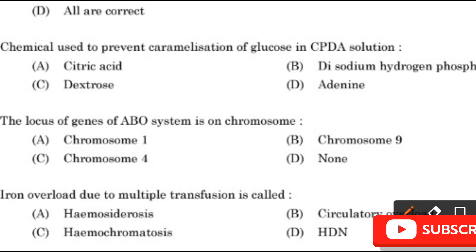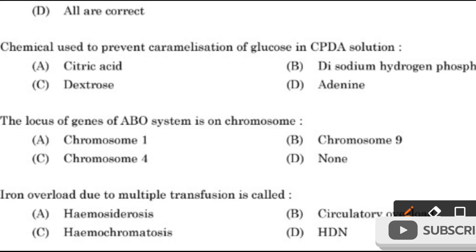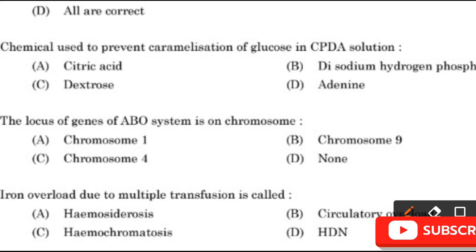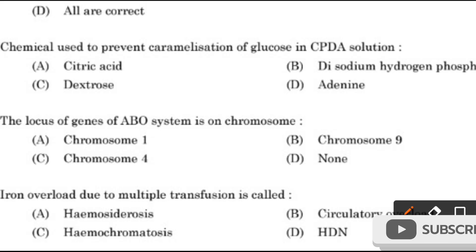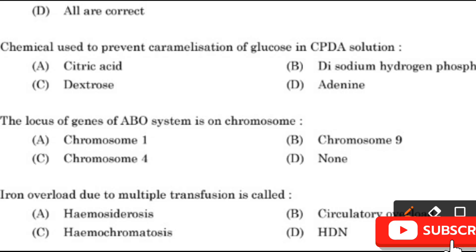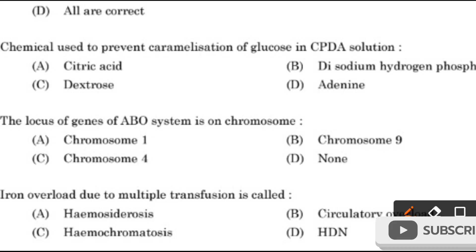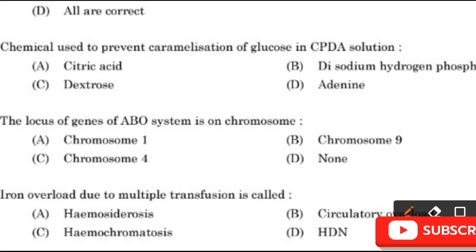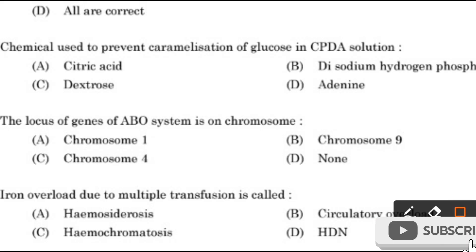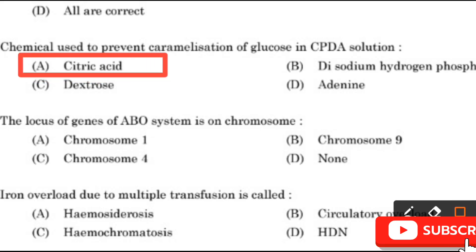Question 11: Chemical used to prevent caramelization of glucose in CPDA solution — Citric acid, Disodium hydrogen phosphate, Dextrose, or Adenine? The chemical used to prevent caramelization of glucose in CPDA solution is citric acid.